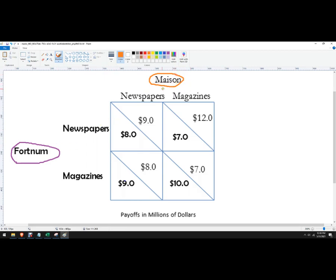The way to read this is the first number belongs to the left player, so that's Fortnum, and the second number belongs to the top player, which is Mason. Let's say Mason chooses to advertise in newspapers. What's better for Fortnum, newspapers or magazines? It's better to do magazines because nine is higher than eight.